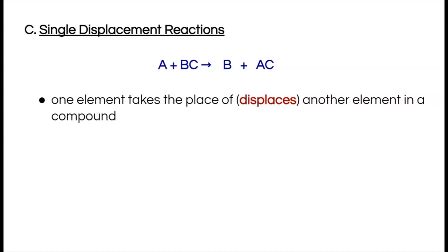This is the third of four videos on predicting products of chemical reactions. We're going to look at the third type, which is a single displacement reaction, sometimes called a single replacement reaction.